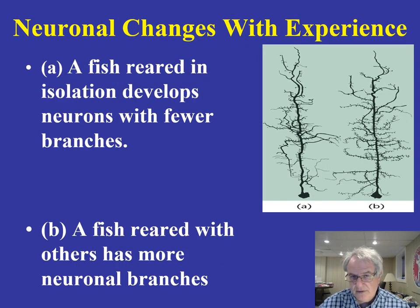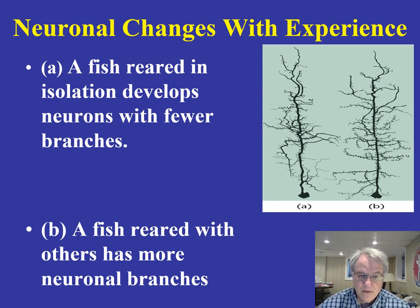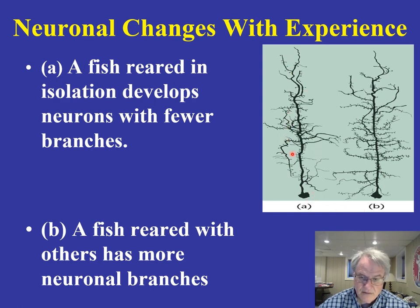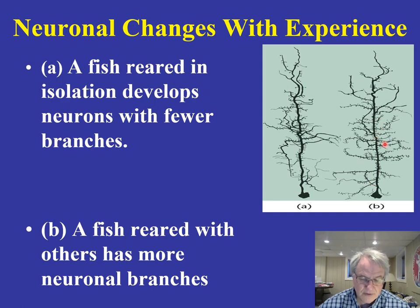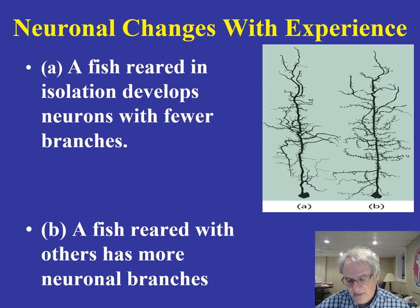Here's an interesting example of neural changes related to experience. A neuron taken from a fish reared in isolation shows a lot less branching compared to a fish reared socially, which shows much more neural branching. The message is that experience can have dramatic effects on neural structure.